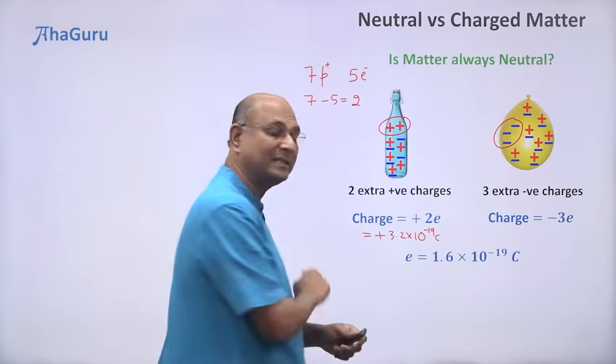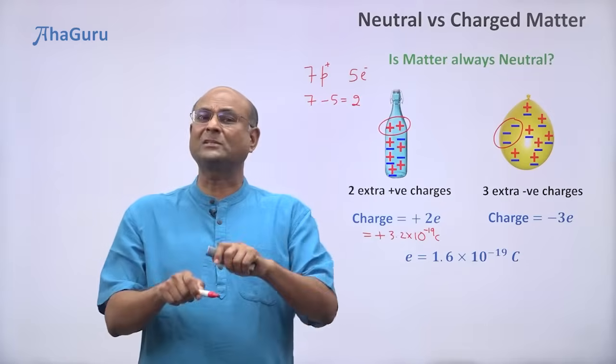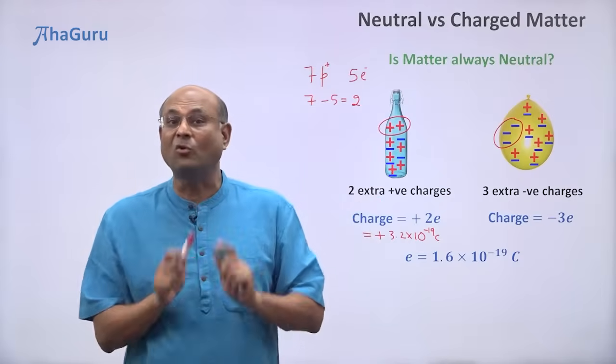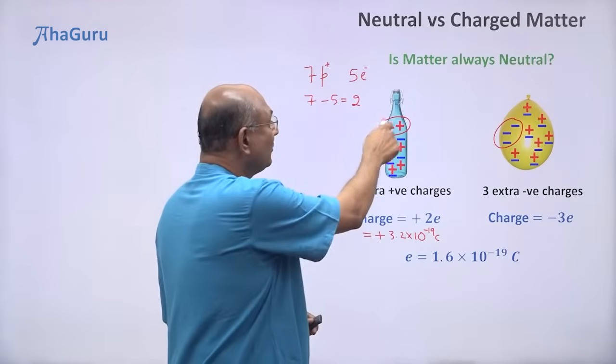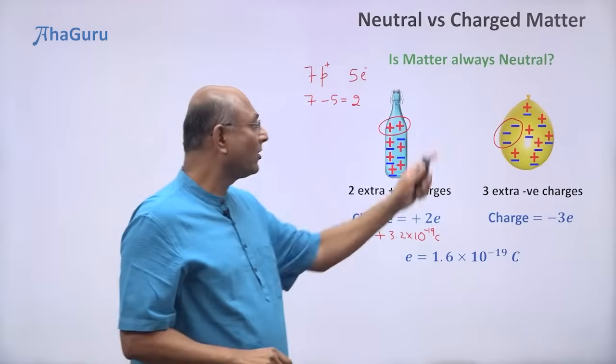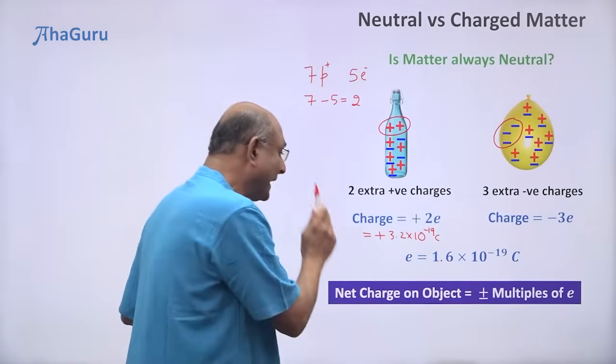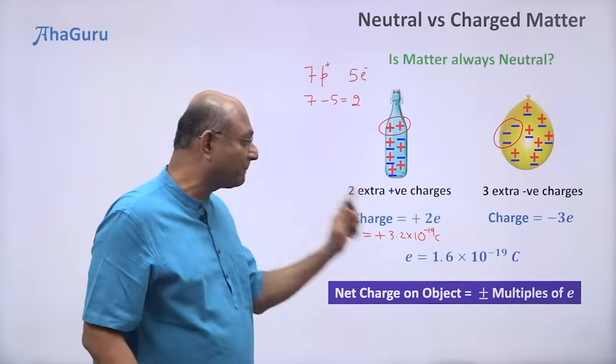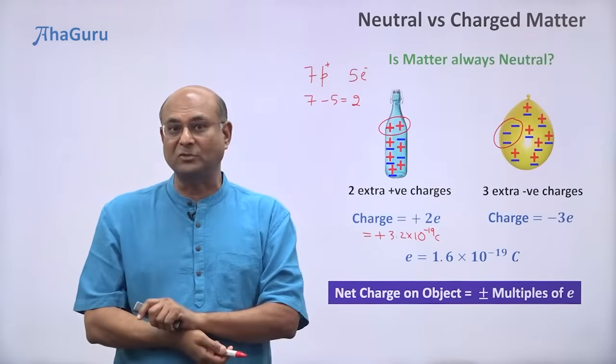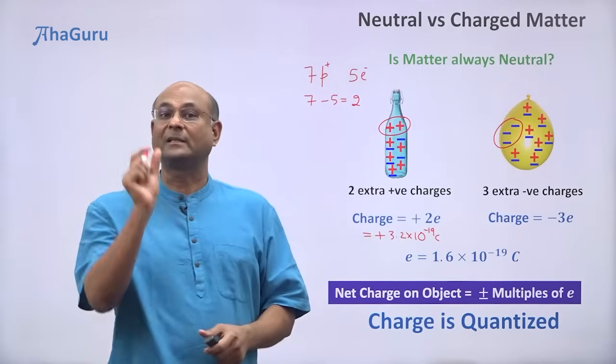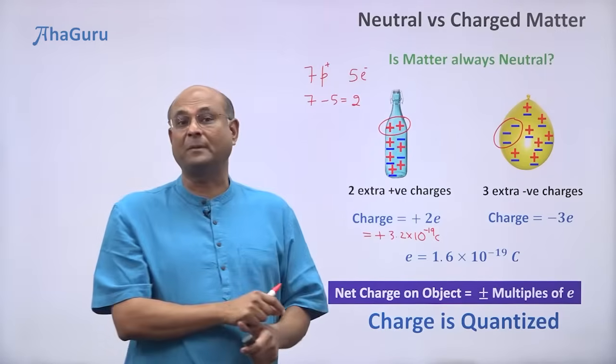Notice, I am getting plus 2E, minus 3E. Will I get a minus 2.5E? Will I get a plus 3.5E? No. Why not? Because either you have extra protons or you are going to have extra electrons. So you will always have an integer number. So the net charge on an object will always be plus or minus multiples of E. We say the charge is quantized. The smallest unit of charge will be E. This is the fundamental unit of charge.